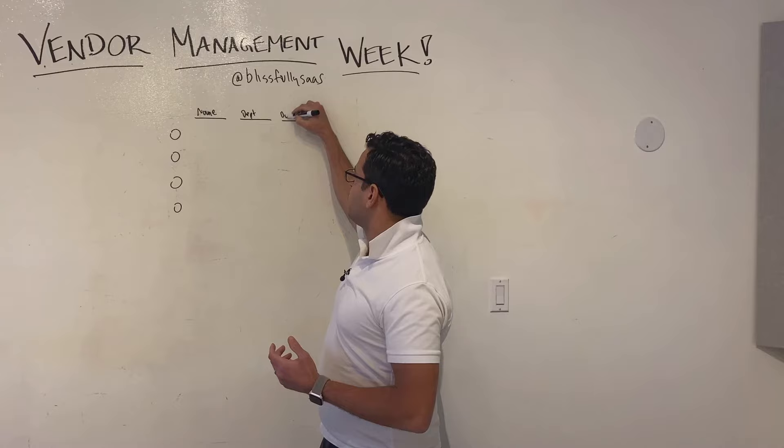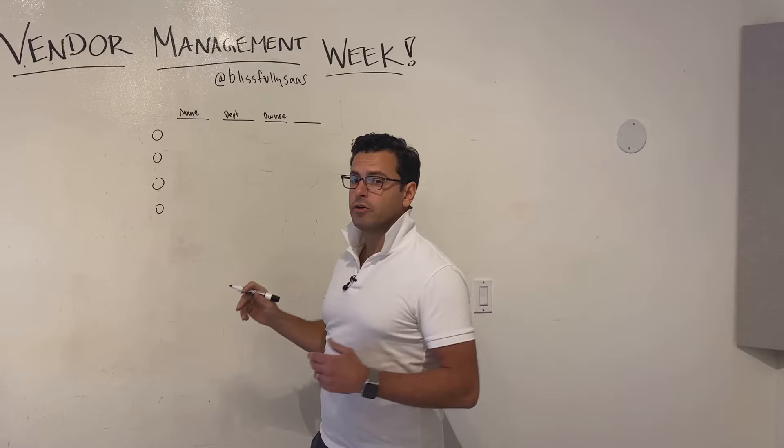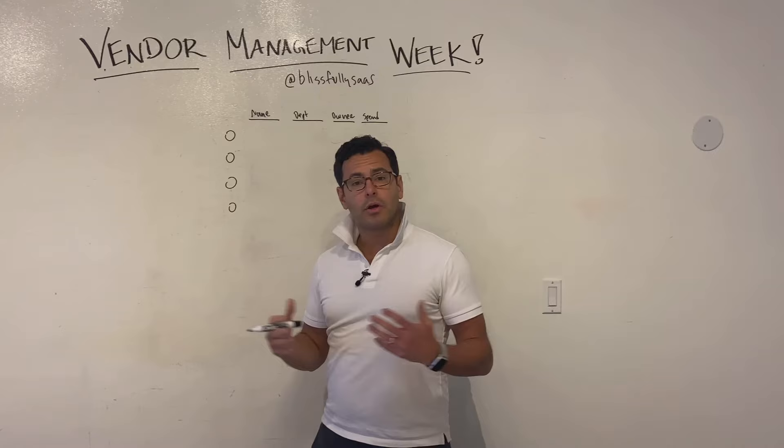Beyond the name and description, you probably also want to track things such as what department is using the vendor, who the owner is inside the company so you know who to ask, and some financial metrics like how much you're spending and when it renews.